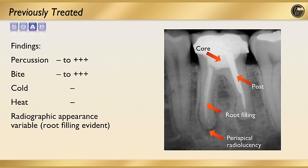Looking at a previously treated case, there may or may not be percussion or bite sensitivity. Again, there will be no response to thermal tests because there is no living tissue. Radiographically, we would see signs of disease — periapical radiolucency. With previously treated teeth, we also want to look for caries, posts, signs of fracture, and untreated canals. This is a great time to have more than one radiographic view of a tooth.